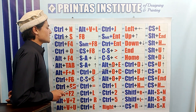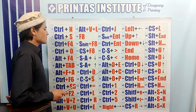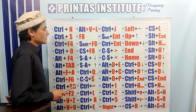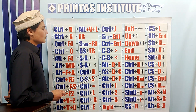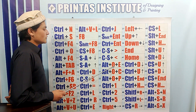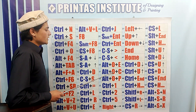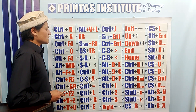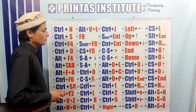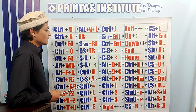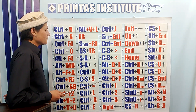Alt O E is used to change the case of the text — it means you can change the text to all caps, lower case, or dual case. Alt O C is used to open the column window of the text, in which we can convert our text into many columns.